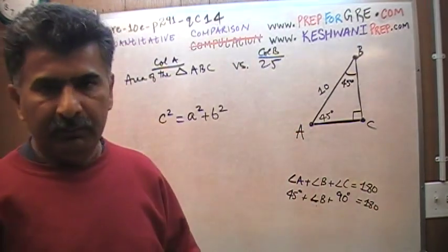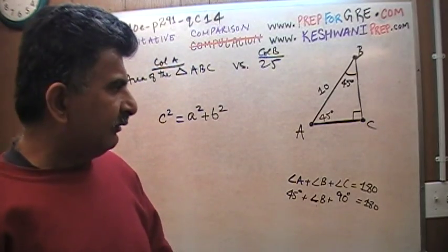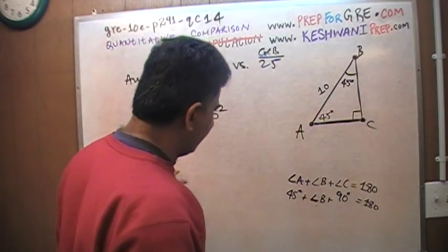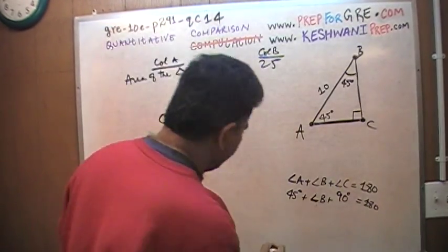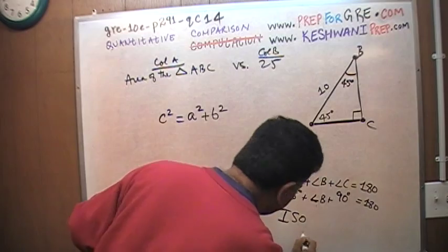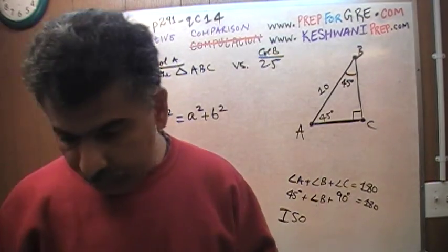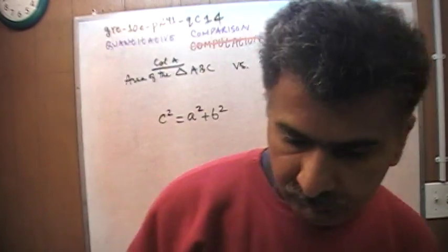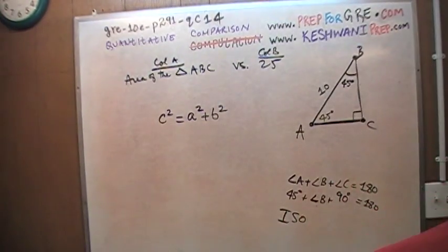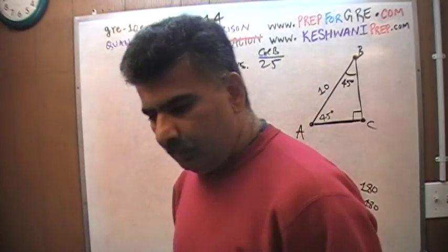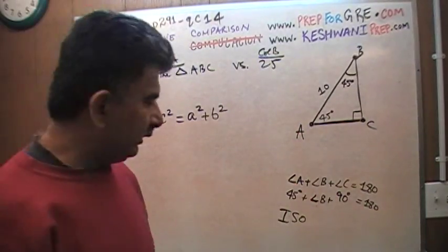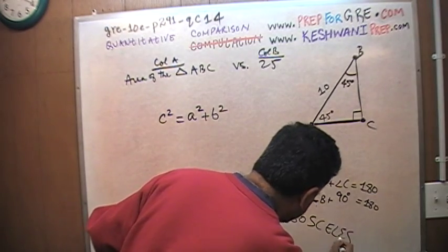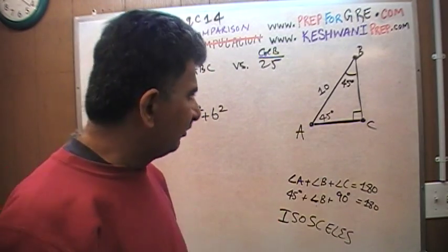Now what does that get us? Well, what that tells us is that we are dealing with an isosceles triangle. I shouldn't do these things because I do not know how to spell this thing, and now I am stuck. I need my electronic dictionary in a hurry. Just give me a second. I don't have it handy. It is called an isosceles triangle. I believe this is how it is spelled.